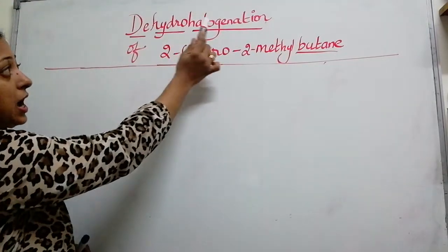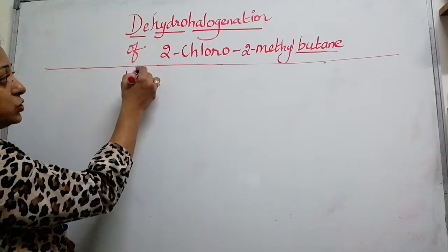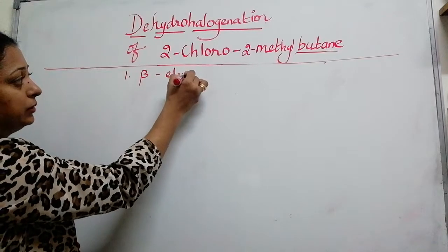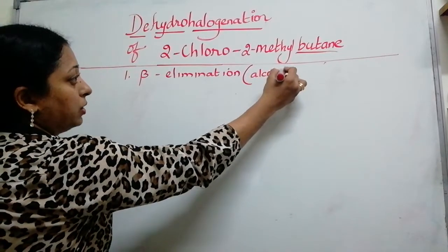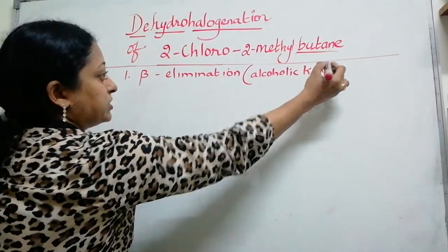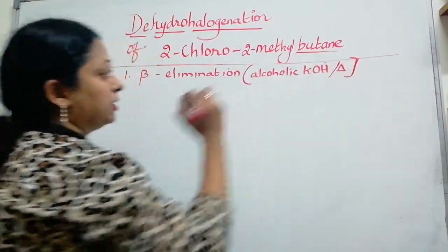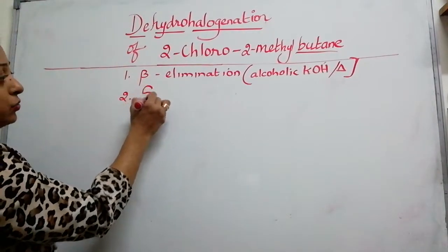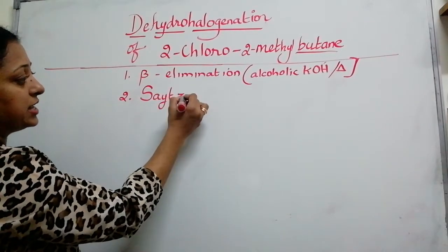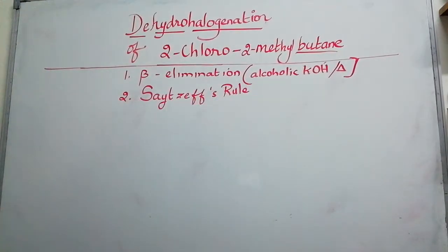As soon as you see the word dehydrohalogenation, two important points come to our mind. The first one is beta elimination which is done using the reagents, alcoholic KOH which is potassium hydroxide followed by heating. First we need to identify the mechanism. Second important thing is a rule is applied. We call that as Saytzeff's rule. So using these two pieces of information, it is possible to do dehydrohalogenation.